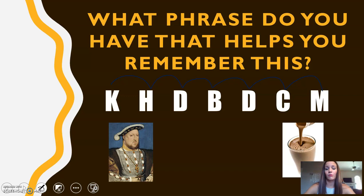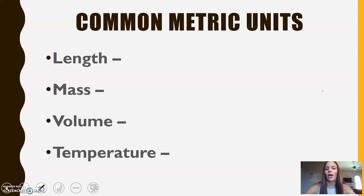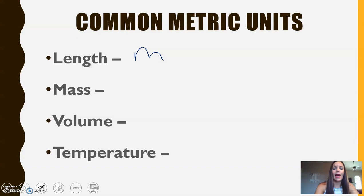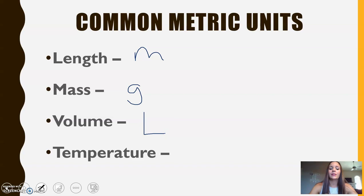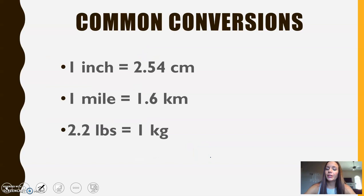We have 'King Henry Died By Drinking Chocolate Milk' — you may know it slightly differently, but whatever way you know it is fine. In science we use metric; we're not going to measure in inches or ounces. Length is meters (small m), mass is grams or kilograms, volume is liters (capital L), and temperature is degrees Celsius. Take a second to write down the common conversions — we'll practice some basic ones in class.